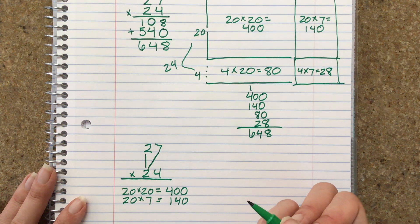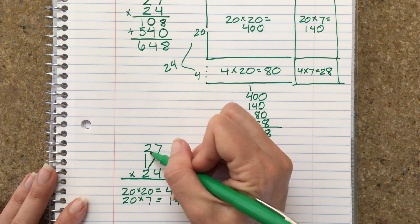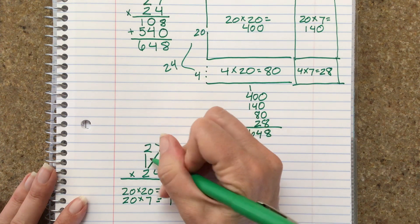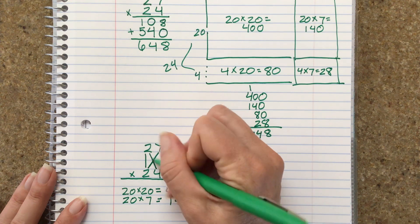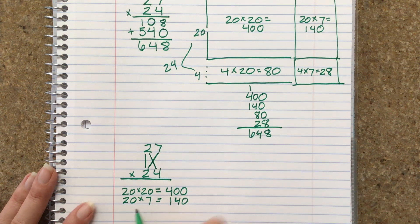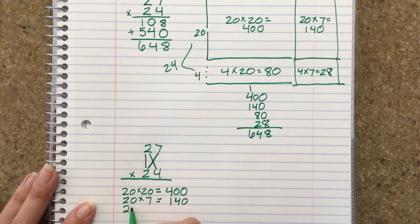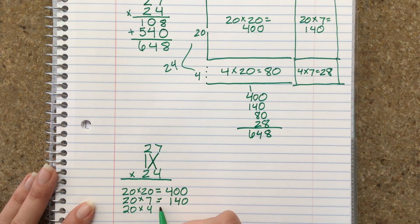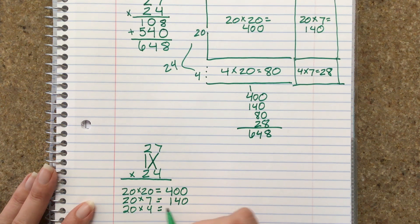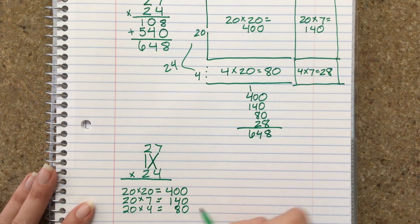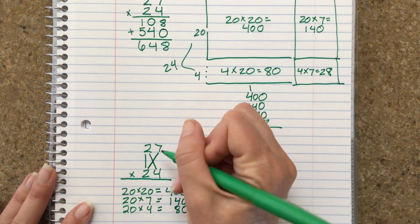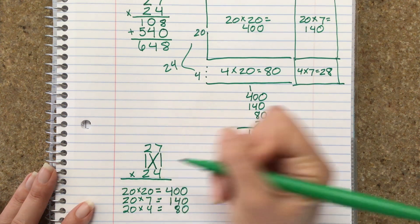Okay, now I'm going to take this 20 and multiply it by this 4. I'm going to draw a line showing that I've done this one. 20 times 4. 2 times 4 is 8, so attach the 0. And then I have one more I need to do over here, 7 times 4.